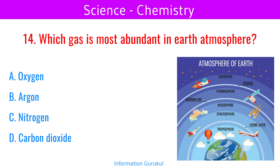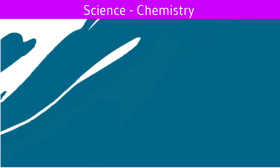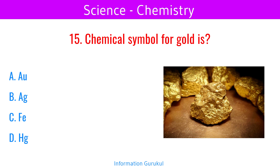Which gas is most abundant in Earth's atmosphere? Nitrogen. Chemical symbol for gold is Au.